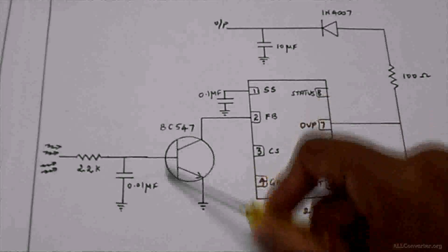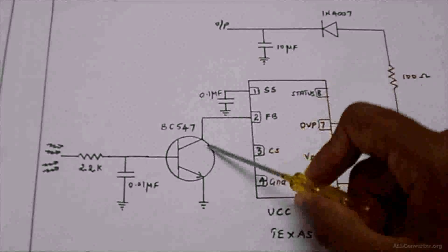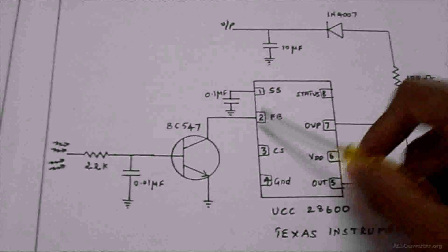Here the transistor acts as a switch. When input is given to the transistor, it will act in ON condition. The output voltage from the transistor is given to the feedback terminal of the IC.